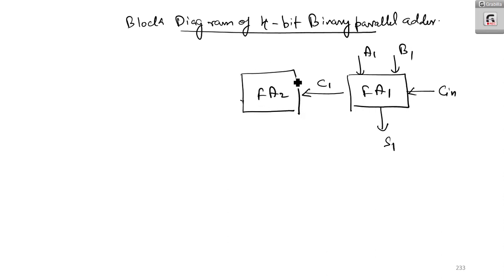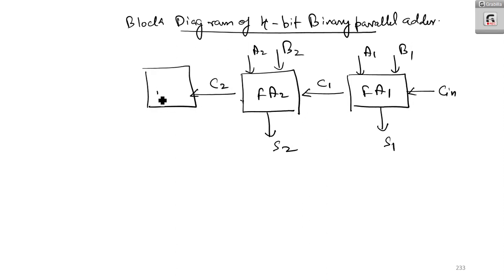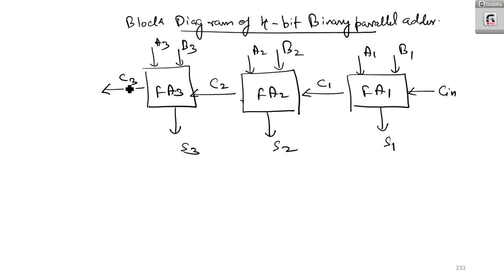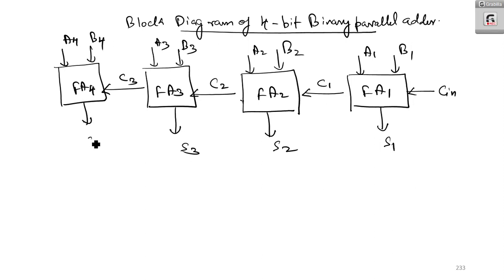Full Adder 2 has inputs A2 and B2, giving sum S2 and carry C2, which is propagated to FA3. There you have A3 and B3, giving sum S3. That carry is propagated to Stage 4, Full Adder 4, where you have A4 and B4, giving sum S4.